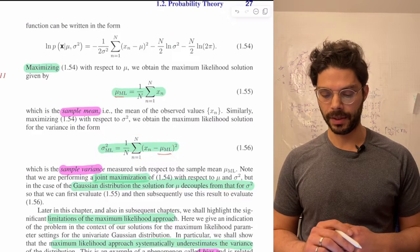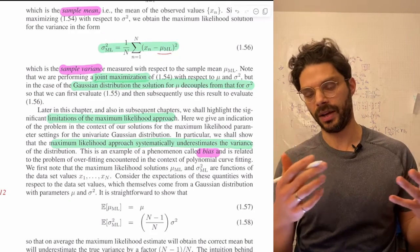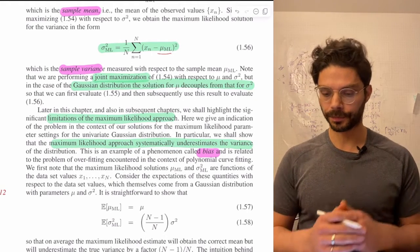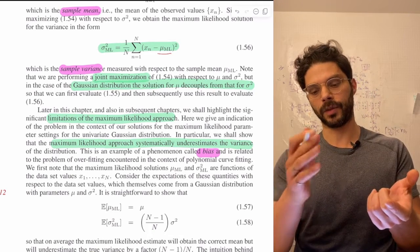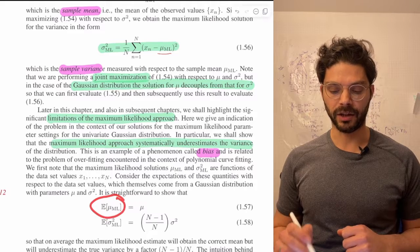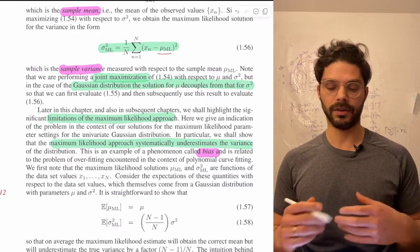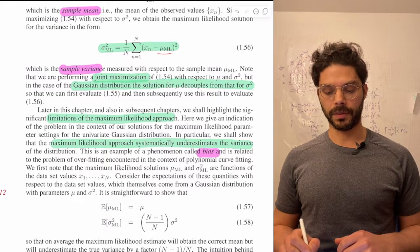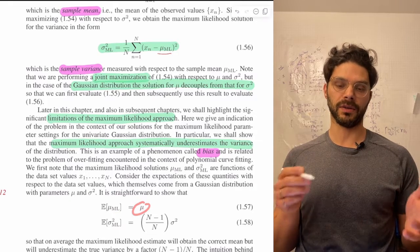Now we can ask how good those estimates are — how close they are to the true values, and whether they tend to fall on one side or the other. This is the notion of bias: the expected difference between the estimate and the true parameter. The sample mean estimator is unbiased — the expected value of the sample mean over different data sets equals the true mean mu, so the expected difference is zero.